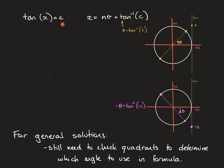The general solution for tan is just one formula, and that one formula generates all the answers. If c is positive you're working in the first and third quadrants and the angle you substitute in will be a positive angle. If your c value is negative, you'll be working in the second and fourth quadrants and the angle you substitute in will be a negative angle. For general solutions you still need to check which quadrants you're working in to determine what to substitute into your formula.